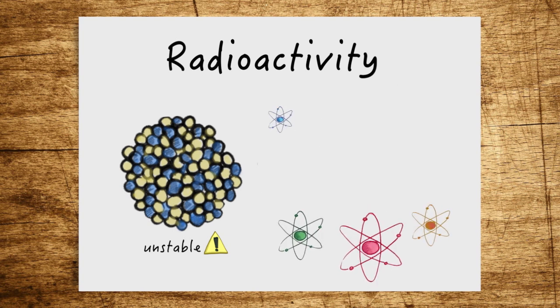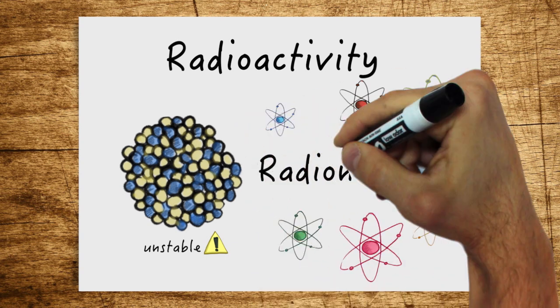There are different types of atoms with unstable cores, and these are collectively referred to as radionuclides.